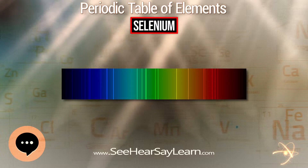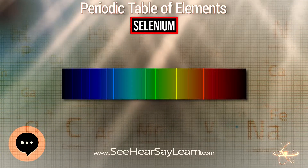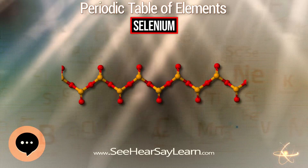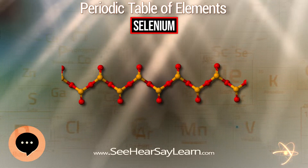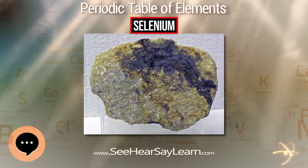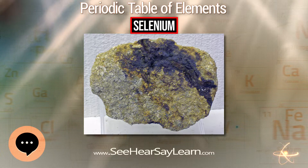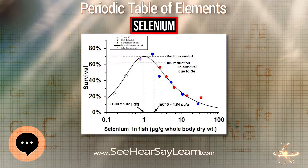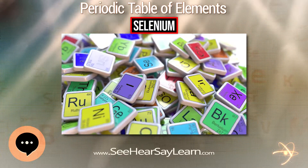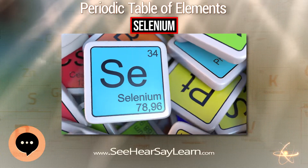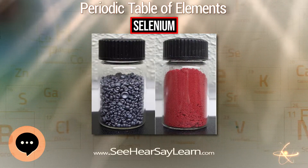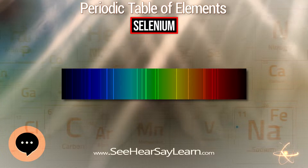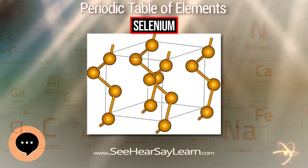Whereas other Se forms are insulators, gray Se is a semiconductor showing appreciable photoconductivity. Unlike the other allotropes, it is insoluble in CS2. It resists oxidation by air and is not attacked by non-oxidizing acids. With strong reducing agents it forms polyselenides. Selenium does not exhibit the changes in viscosity that sulfur undergoes when gradually heated. Owing to its use as a photoconductor in flat panel X-ray detectors, the optical properties of amorphous selenium thin films have been the subject of intense research.